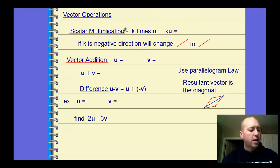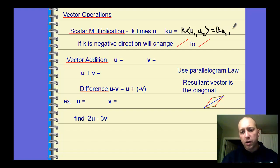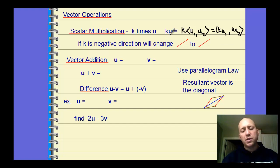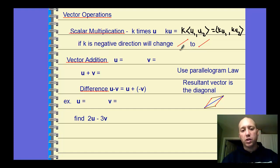Vector operations: a scalar multiplication occurs when you have k times vector U. Written with component form, k times ⟨U1, U2⟩ equals ⟨k·U1, k·U2⟩ — you just multiply through. For vectors we usually use the variable names U, V, W in bold lowercase. If k is negative, the direction changes — the negative scalar just reverses the direction of the line segment, from P to Q or Q to P.